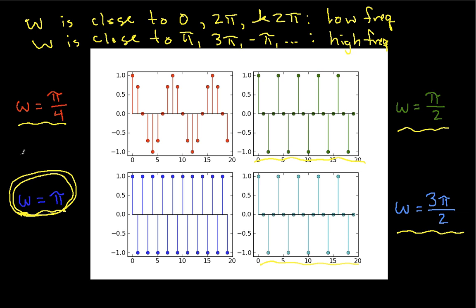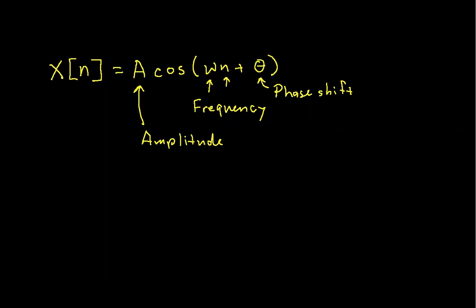So mathematically, we can actually explain this. If we write, for example, suppose we have a signal y of n is cosine some omega, and let's add 2 pi to this omega times n plus theta. So what we've done is we've said, maybe this guy here was pi over 2. And we said, well, let's increase it by a factor of 2 pi.